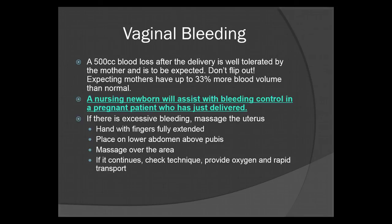Regarding post-delivery vaginal bleeding: a 500 cc blood loss after delivery is well tolerated and to be expected — do not flip out. Pregnant women have up to 33% more blood volume than normal because they have been supporting a second life form. A nursing newborn will assist with bleeding control. However, if there is excessive bleeding, massage the uterus — hand with fingers fully extended, placed on the lower abdomen just above the pubis, massage over the area. If it continues, check technique, provide oxygen, and rapid transport. If you have an advanced level partner on board, have them take over patient care.